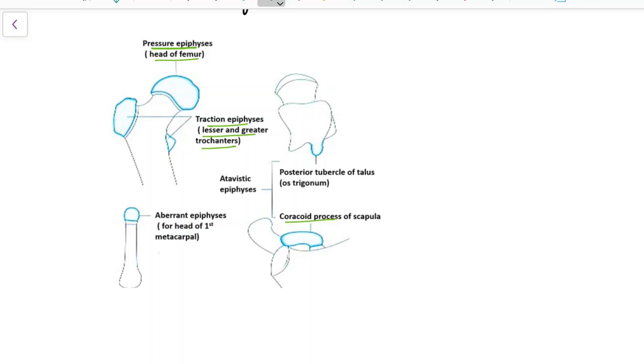Coracoid process of scapula and posterior tubercle of talus, that is Os trigonum, are examples for Atavistic Epiphysis. Aberrant Epiphysis may be present in the head of first metacarpal and base of other metacarpals.